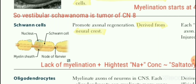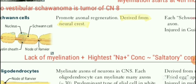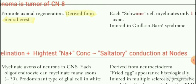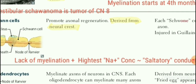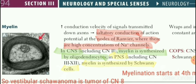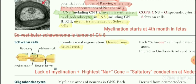The uncovered areas are called nodes of Ranvier. At these points, the action potential jumps from one Schwann cell to the next. These nodes lack myelination and have the highest concentration of sodium channels. Conduction via sodium at these points is called saltatory conduction. Three MCQs from this: lack of myelination at nodes, highest sodium concentration at nodes, and that conduction is called saltatory conduction.